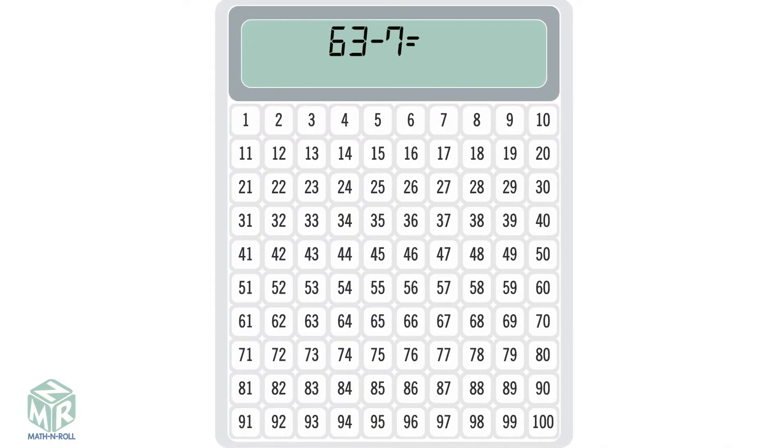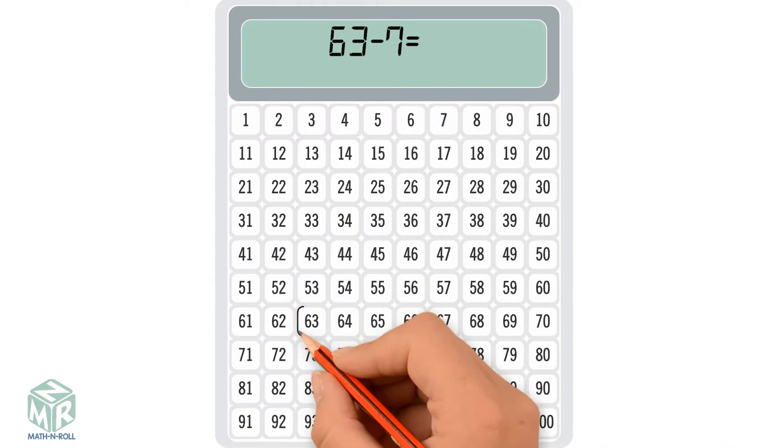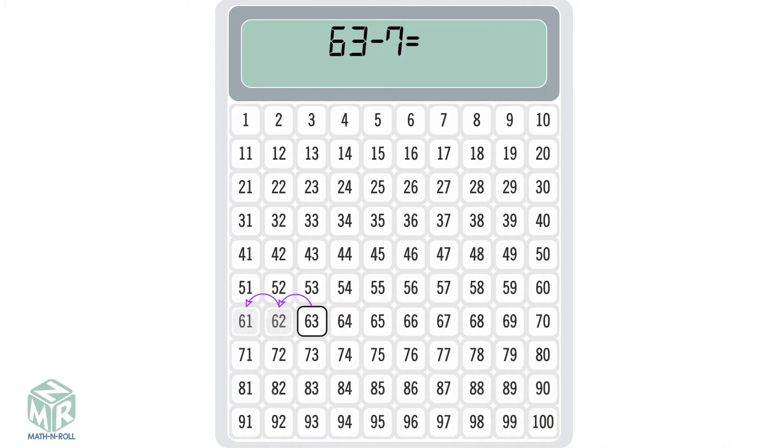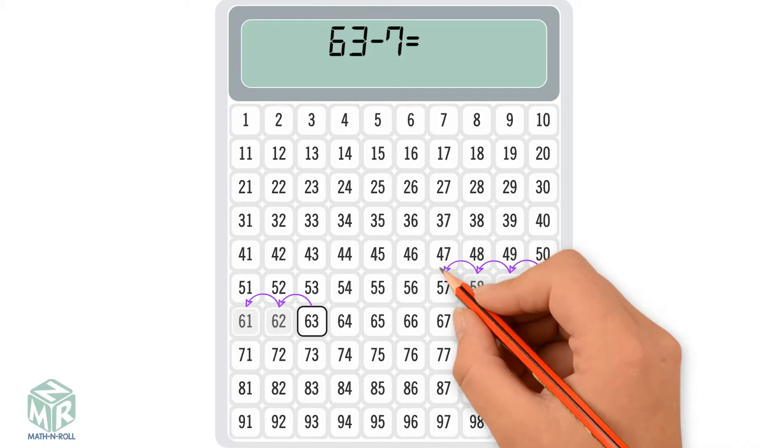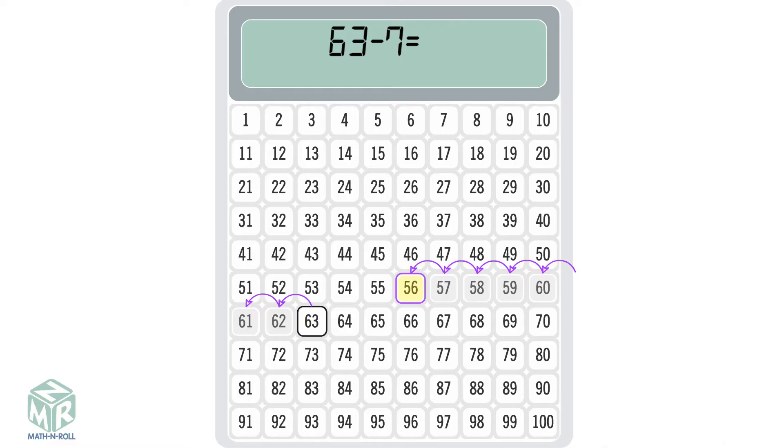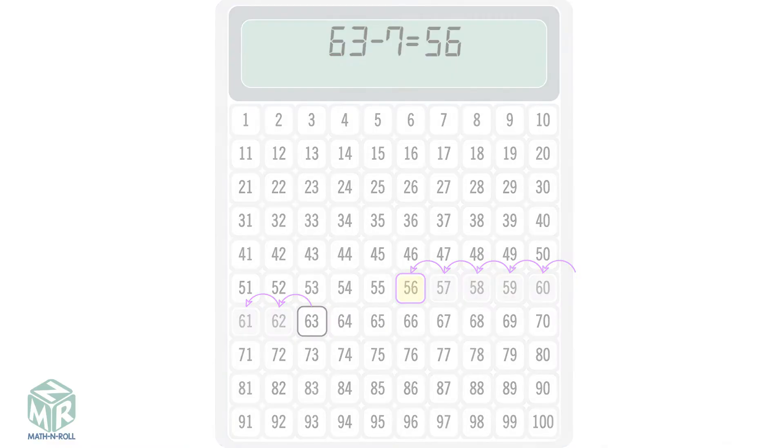63 minus 7. Start at 63, move left, or subtract 7 ones onto the next row. We get 56, so 63 minus 7 equals 56. Let's try another example,